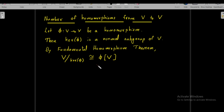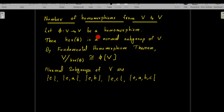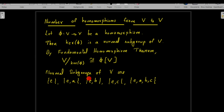We make use of this result to count the number of homomorphisms from V to V. Since φ is a homomorphism from V to V, the kernel of φ is a normal subgroup of V. To identify the homomorphisms, we first write all normal subgroups of V. Since the Klein 4-group V is an abelian group, all subgroups are normal. The subgroups of the Klein 4-group are {e}, {e,a}, {e,b}, {e,c}, and {e,a,b,c}.